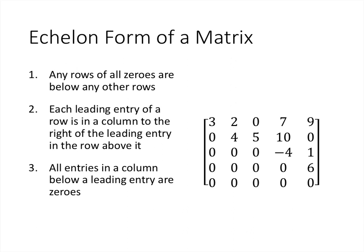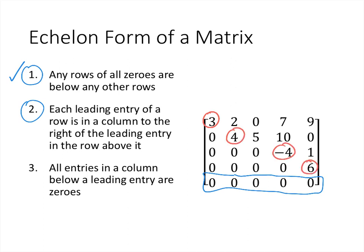Let's try a different matrix. Starting with condition 1: this matrix does have a row of all zeros, but this time it is below all of the other rows, so condition 1 checks out. For condition 2, the leading entries are the 3, the 4, the negative 4, and the 6 — the first non-zero entries going from left to right. The 4 is to the right of the 3, the negative 4 is to the right of the 4, and the 6 is to the right of the negative 4. You can see those four circled numbers form the same echelon formation as the planes in the earlier picture.